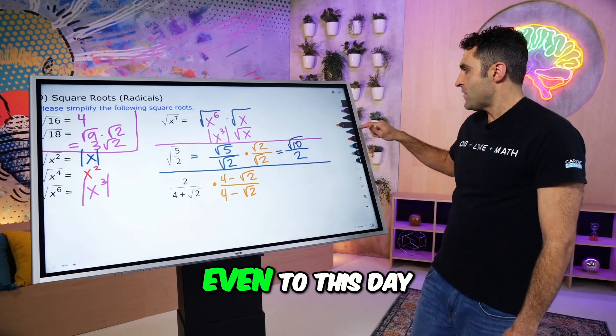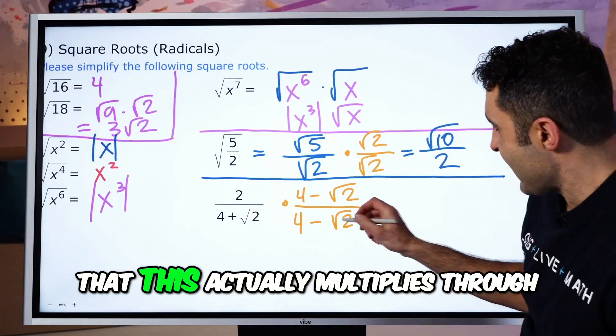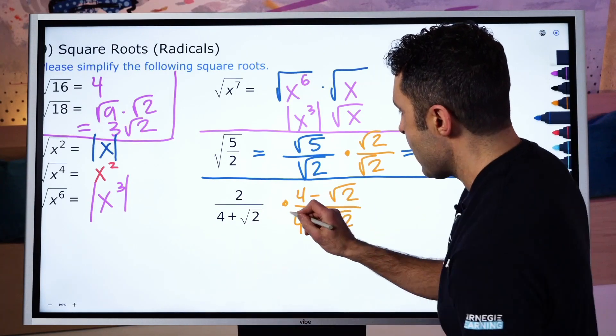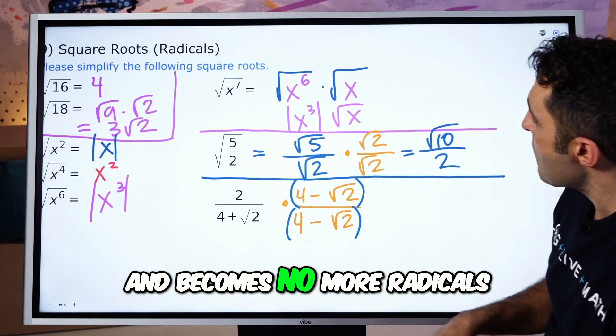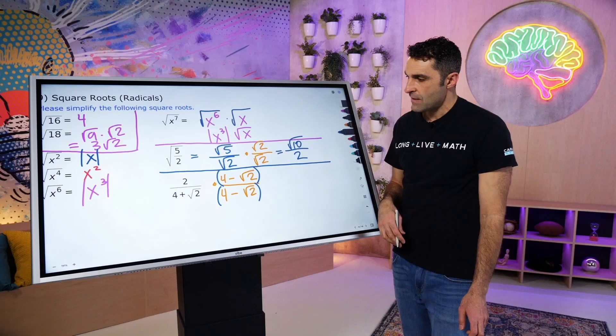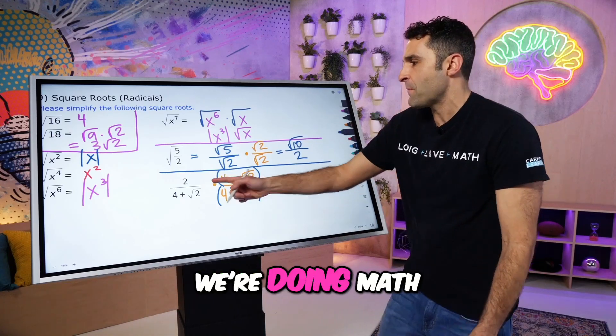It's fascinating to actually see, even to this day after so many years, that this actually multiplies through and becomes no more radicals. That is grammatically incorrect, but it doesn't matter. We're doing math.